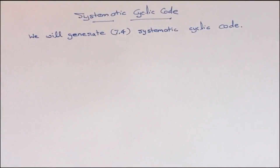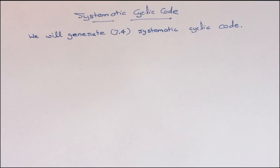Hello everybody. Today we are going to talk about systematic cyclic codes. Systematic codes are a special class of general codes. In this special type of cyclic code, the first k bits are data bits and the last n minus k digits are parity check bits.